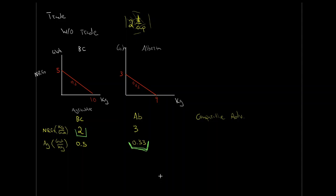If there's a difference in opportunity costs such that we'd have comparative advantages in goods, trade theory suggests each region should specialize in what they're best at. BC should specialize in energy production — given our linear PPF, that means going all the way into producing only energy. Alberta is best at agriculture, so Alberta should go all the way into producing only agriculture. But if I'm in BC, I also need some agriculture to eat — I can't just eat energy. So how do I trade, and at what rate?